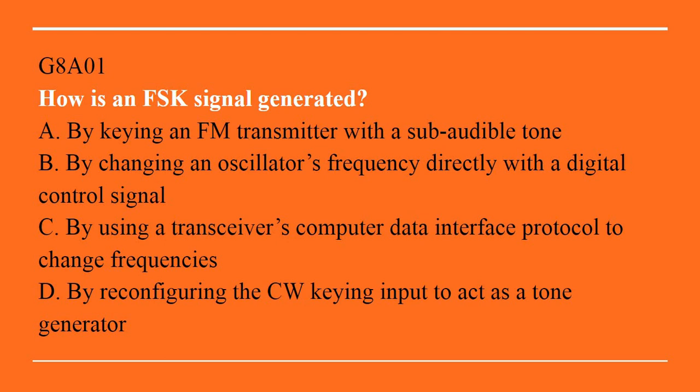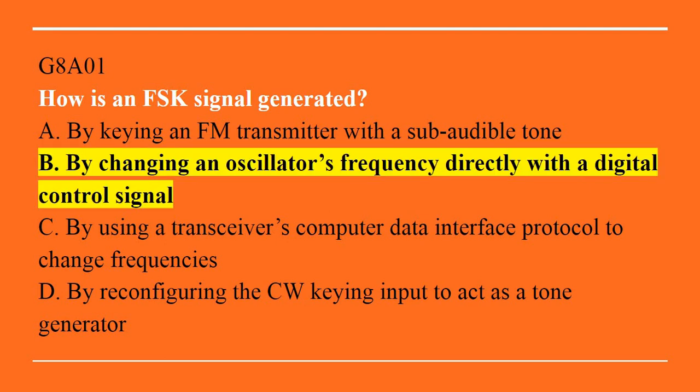G8A01: How is an FSK signal generated? A. By keying an FM transmitter with a subaudible tone. B. By changing an oscillator's frequency directly with a digital control signal. C. By using a transceiver's computer data interface protocol to change frequencies. D. By reconfiguring the CW keying input to act as a tone generator. Answer is B. By changing the oscillator's frequency directly with a digital control signal.